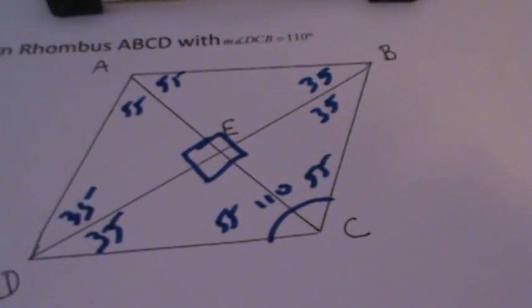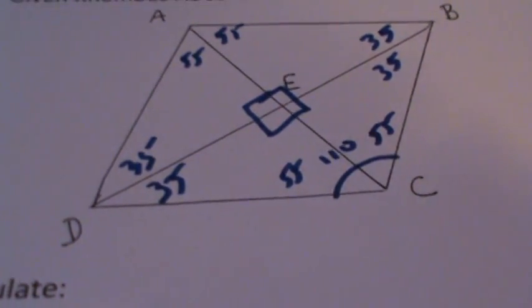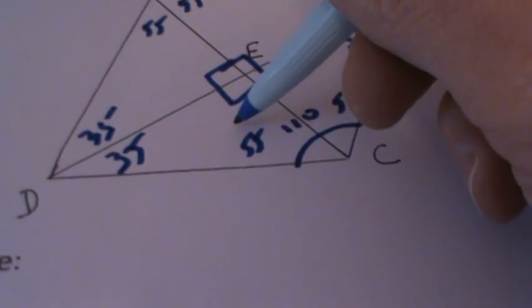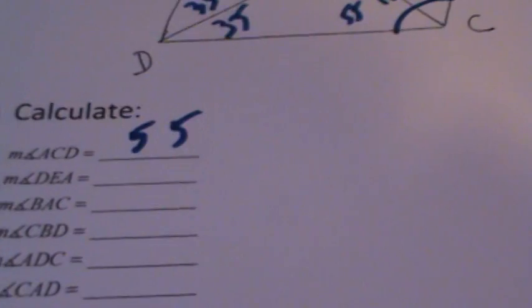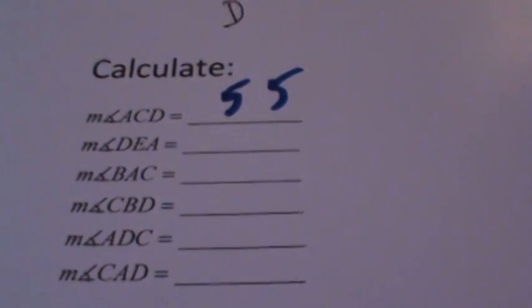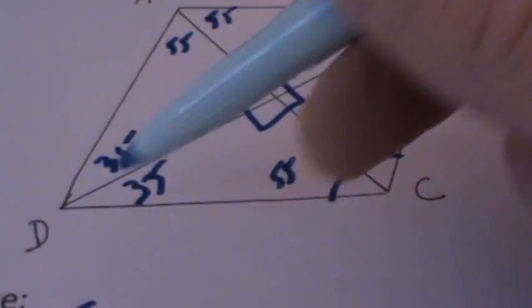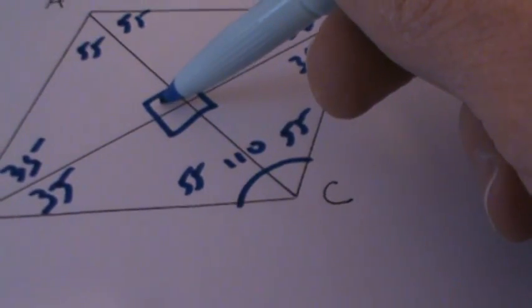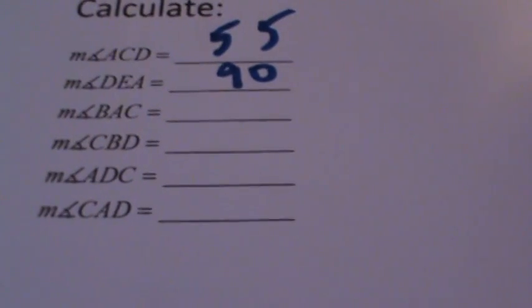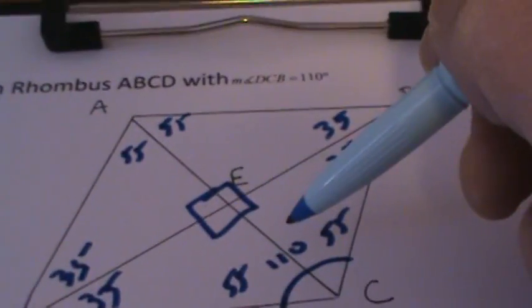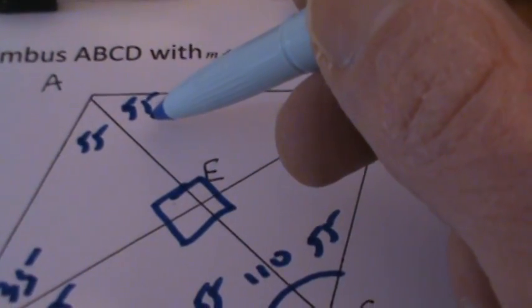The first angle to find is angle ACD, which is located in the upper portion of the rhombus — its measure is 55 degrees. Next, angle DEA is located right in the middle of the rhombus where the diagonals intersect, so its measure is 90 degrees. Angle BAC is located in the upper corner and is also equal to 55 degrees.